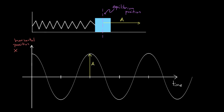And the period, which was the time it took for this entire process to reset—capital T is the period—was the time it takes to reset. That would be from peak to peak, or from trough to trough, or from any point to any analogous point on that cycle. This was the period T.